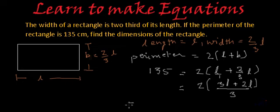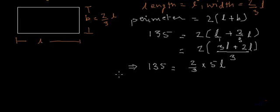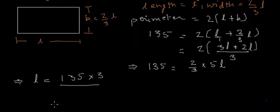So from here, we got 135 is equal to 2 by 3. 3L plus 2L is 5L. And now, since we have only one variable which is L, we will transpose other things to the other side. So from here, we will get L is equal to 135 multiplied by 3. This 3 will get in multiplication divided by this 2 and 5 will come in denominator, so divided by 2 multiplied by 5.